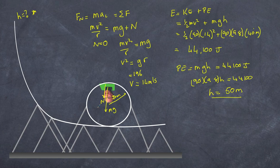So assuming no friction and no energy losses, as long as I start higher than 50 meters, I'm going to go around the loop. If I start lower than 50 meters, I won't make it around the loop. I hope that has helped you understand the basics of roller coaster physics.